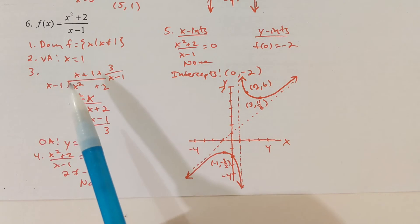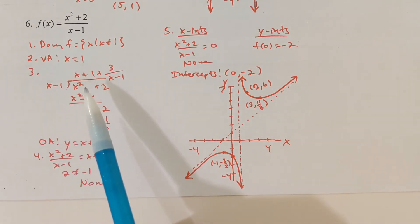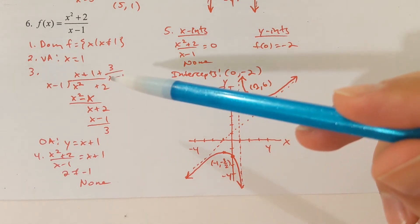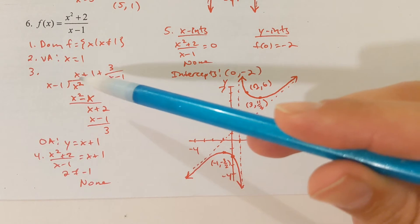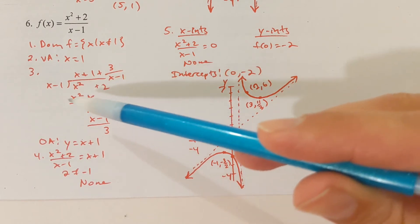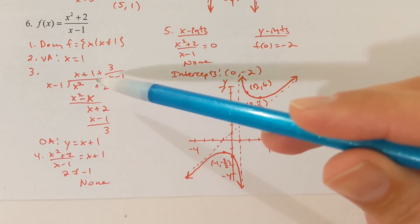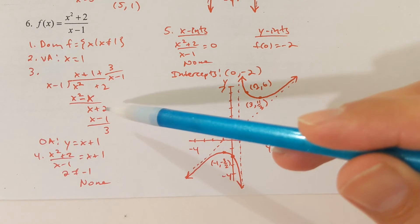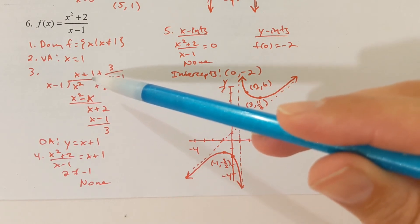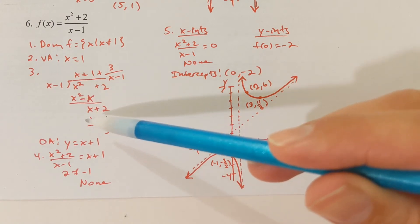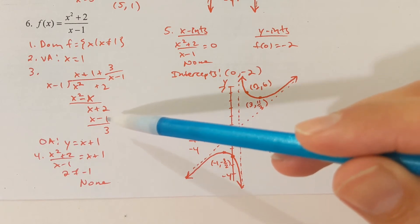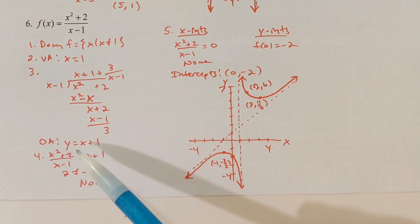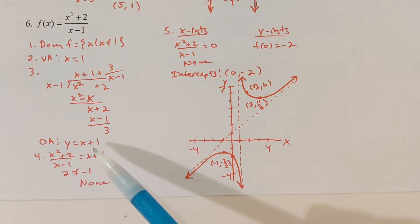Performing polynomial division: x minus 1 goes into x squared plus 2. x times x minus 1 gives x squared minus x. Subtracting, x squared terms cancel, leaving x, then bringing down 2. Next, 1 times x minus 1 gives x minus 1. Subtracting, x minus x is 0 and 2 plus 1 is 3, giving a remainder of 3. The oblique asymptote is y equals x plus 1.